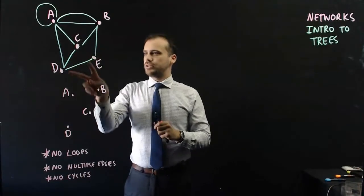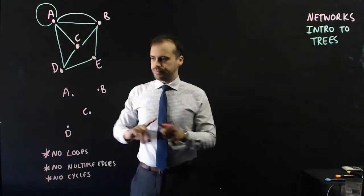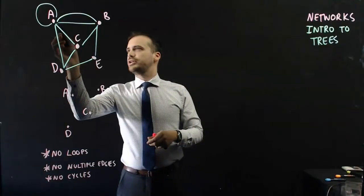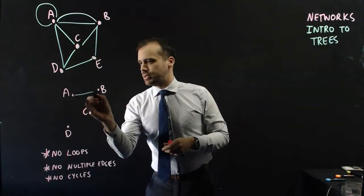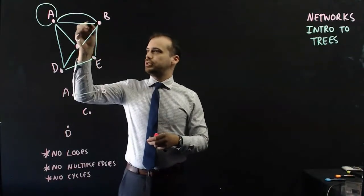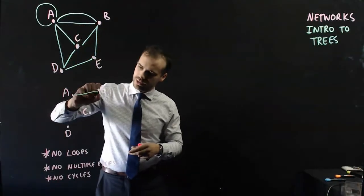And obviously we can only use the connections that already exist. So there's a connection between A and B. So I'm going to draw that one in. There's a connection between B and C. I'm going to draw that one in.